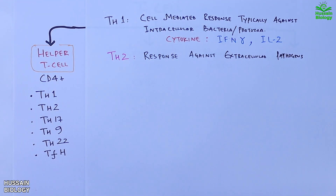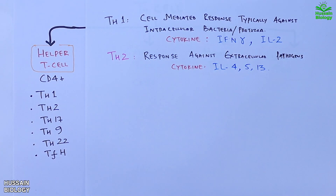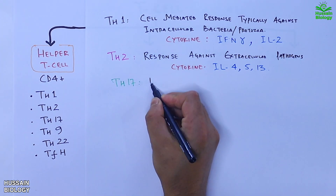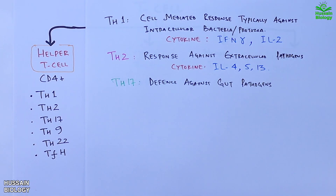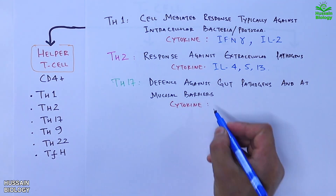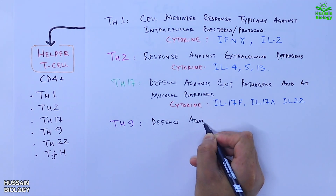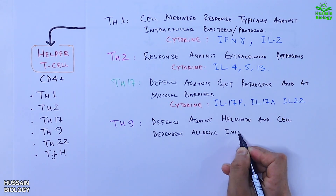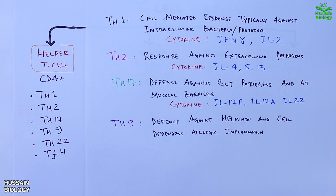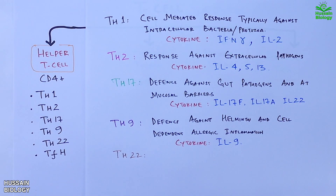Th17 provides defense against gut pathogens and at mucosal barriers, secreting cytokines like IL-17F, IL-17A, and IL-22. Th9 defends against helminth infections and IgE-dependent allergic inflammation, secreting cytokines like IL-9.